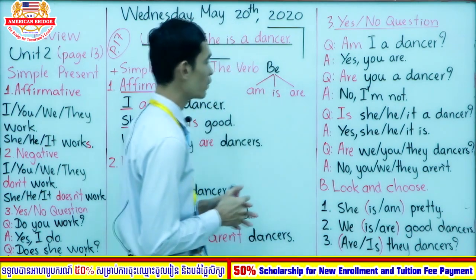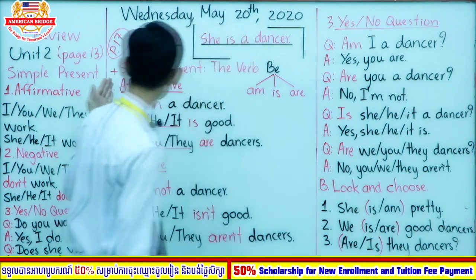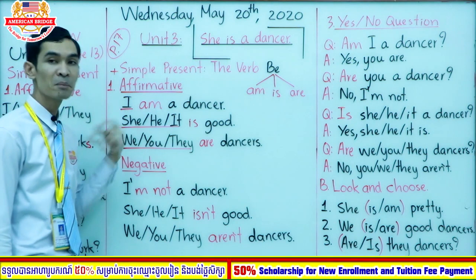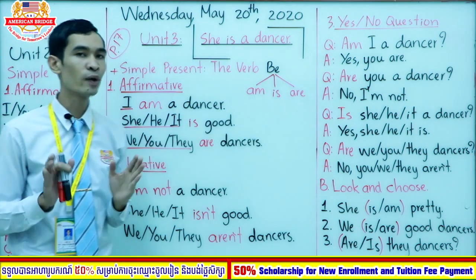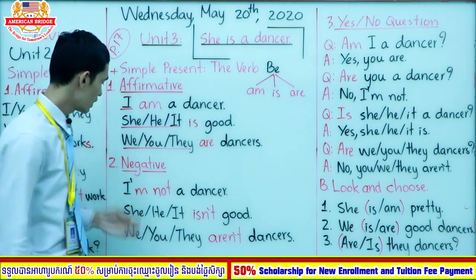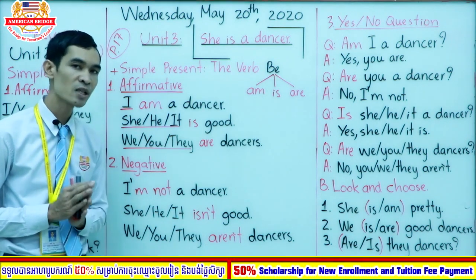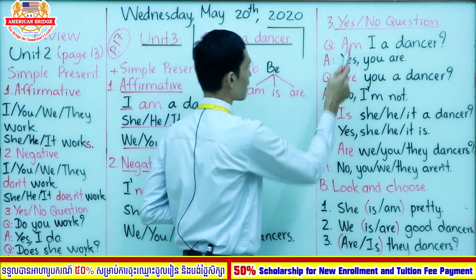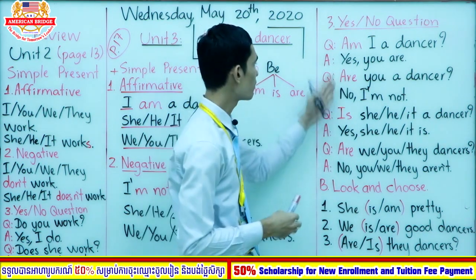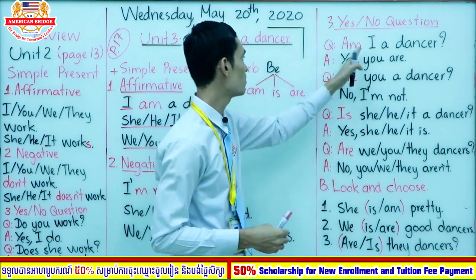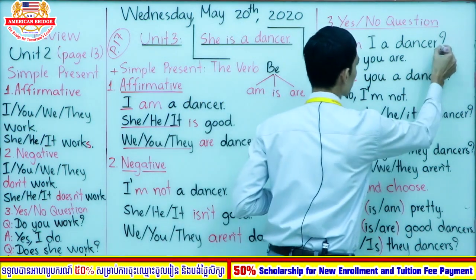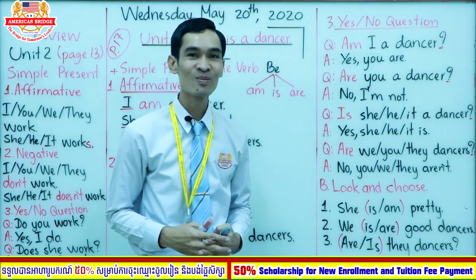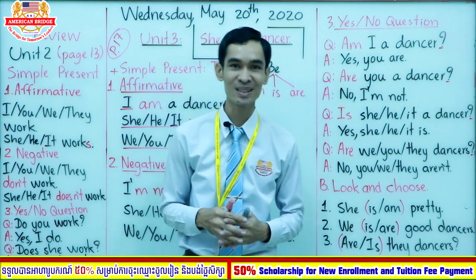Now we have finished our lesson. We covered affirmative, negative, and yes/no questions. For affirmative: use subject plus verb 'be' — 'am', 'is', or 'are' — with the correct subject. For negative: add 'not' after 'be'. For yes/no questions: move the verb 'be' to the front and end with a question mark. Don't forget the question mark when you make a question.